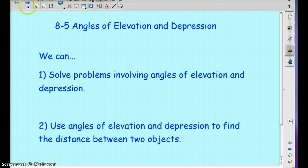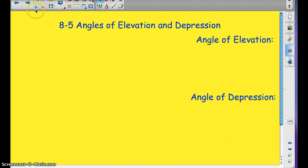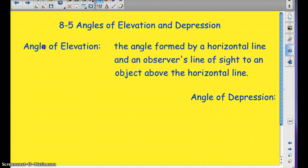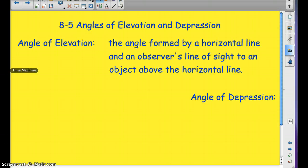So, what is the definition of angle of elevation? Well, here you go. The angle formed by a horizontal line and an observer's line of sight to an object above the horizontal line. So, that is the key word for angle of elevation. It's above the horizontal line.